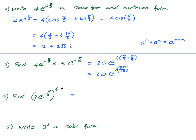When it gets even more complicated — like raising to the power of 6 — watch how easy this is in Euler form. For (2·e^(iπ/2))^6: 2^6 = 64, and using a^(mn) = (a^m)^n, I get 64·e^(i·6π/2) = 64·e^(i·3π).